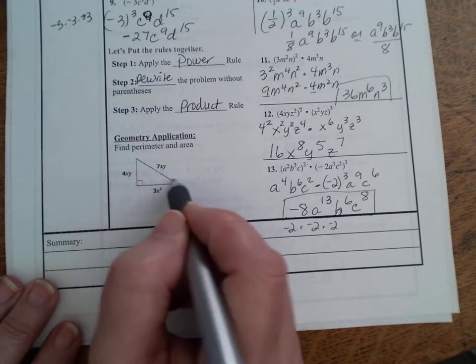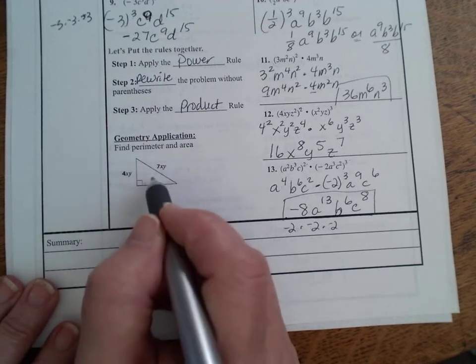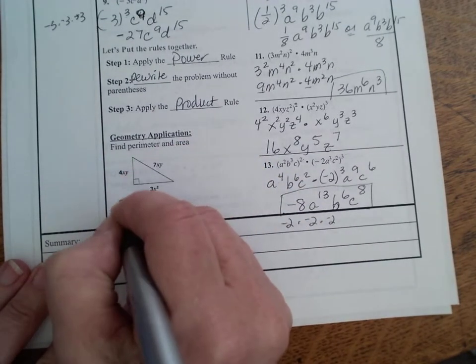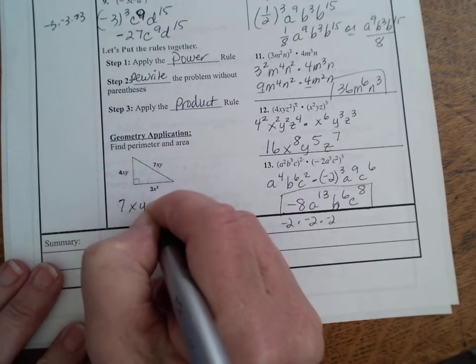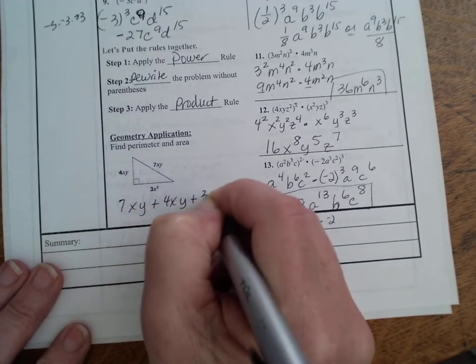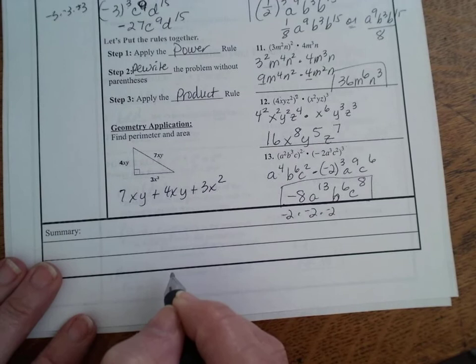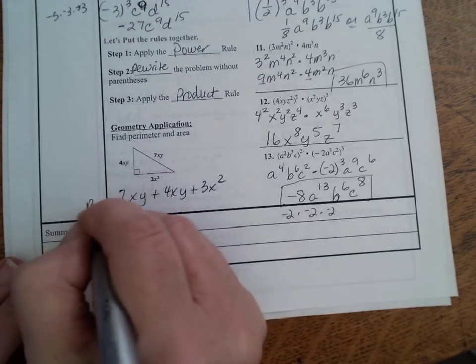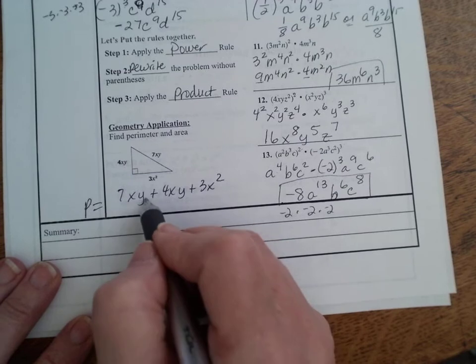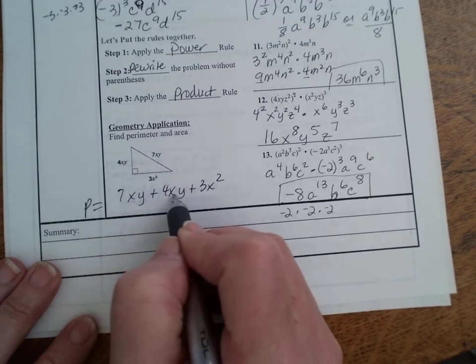So, find the perimeter and area. First of all, perimeter of a triangle, remember your perimeter of a triangle is just distance around. So just think of what you're doing. You're saying 7, and it doesn't matter what you start with, 7x squared, or xy, plus 4xy, plus 3x squared. So your perimeter, distance around, you're adding. So go back to what you know about adding. The only things that we can add here are the 7xy and 4xy.